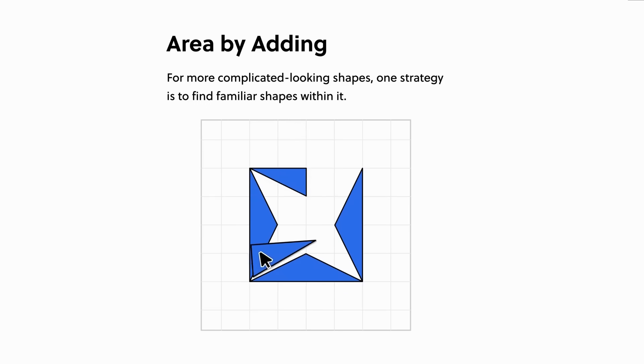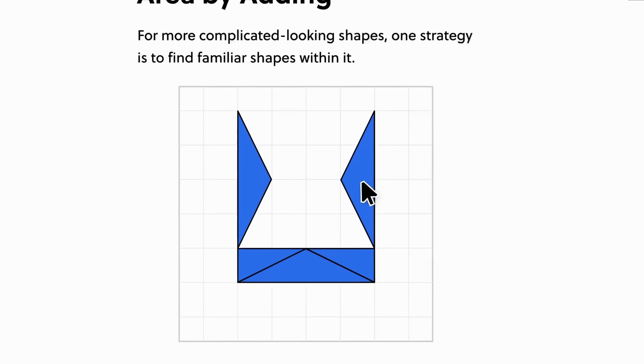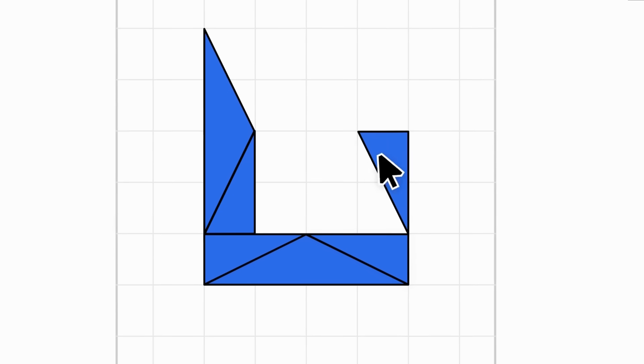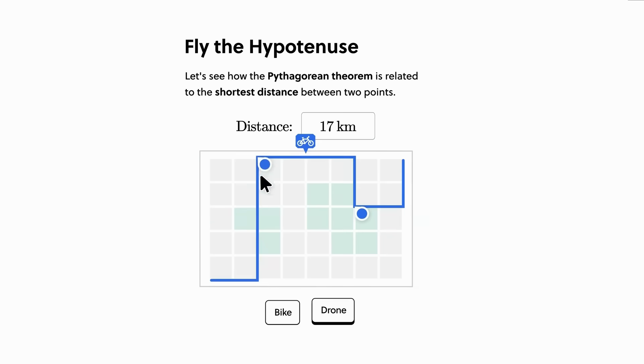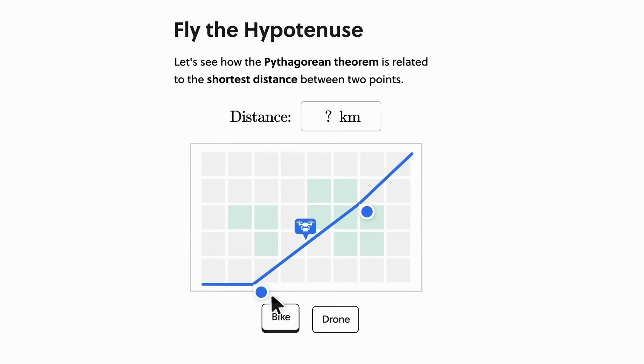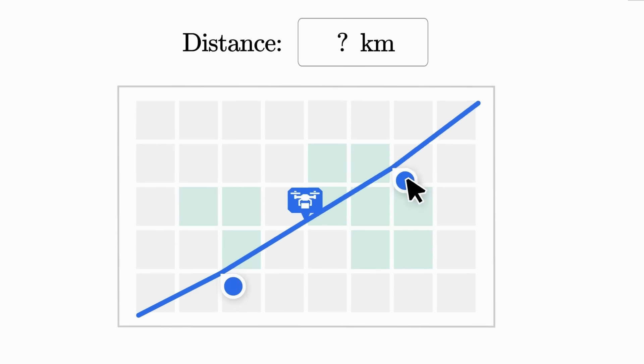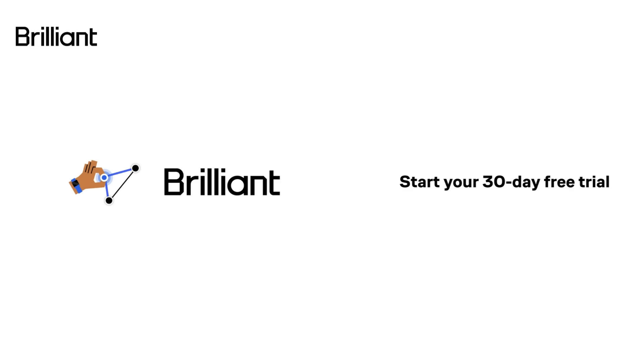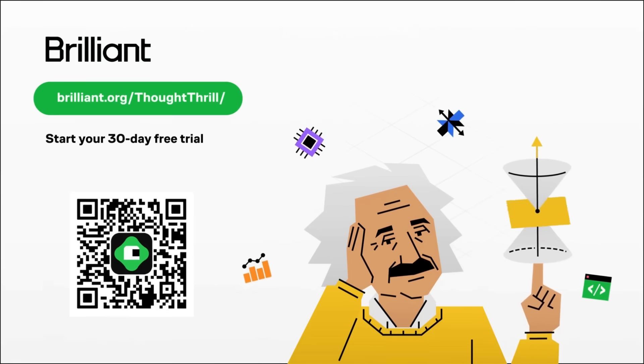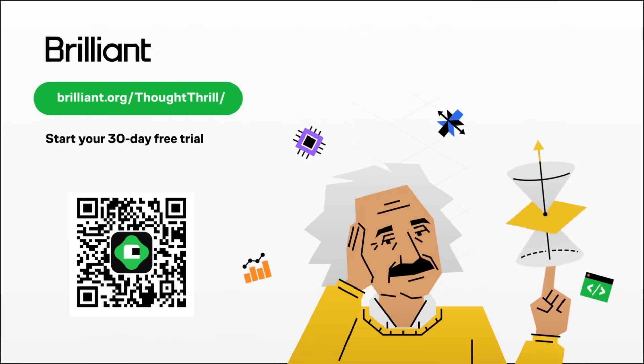Brilliant's measurement course walks you through the fundamentals of geometry, teaching you about the relations between shapes and how to determine angle measures, side lengths, and areas without the use of calculations. Measurement helps you apply visual problem-solving skills using concepts like symmetry and transformations, and it helps build a strong base in geometry which can be used as a launching off point for a variety of different subjects. To try everything Brilliant has to offer for free for a full 30 days, visit brilliant.org slash thoughtthrill or click the link in the description. You'll also get 20% off an annual premium subscription.